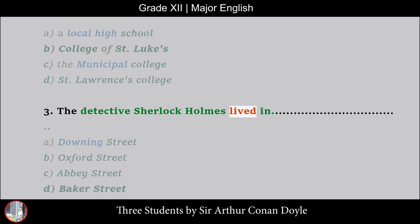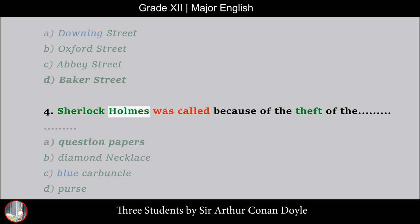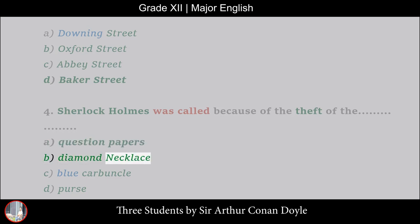3. The detective Sherlock Holmes lived in: A. Downing Street, B. Oxford Street. 4. Sherlock Holmes was called because of the theft of the: A. Question Papers, B. Diamond Necklace, C. Blue Carbuncle, D. Purse.